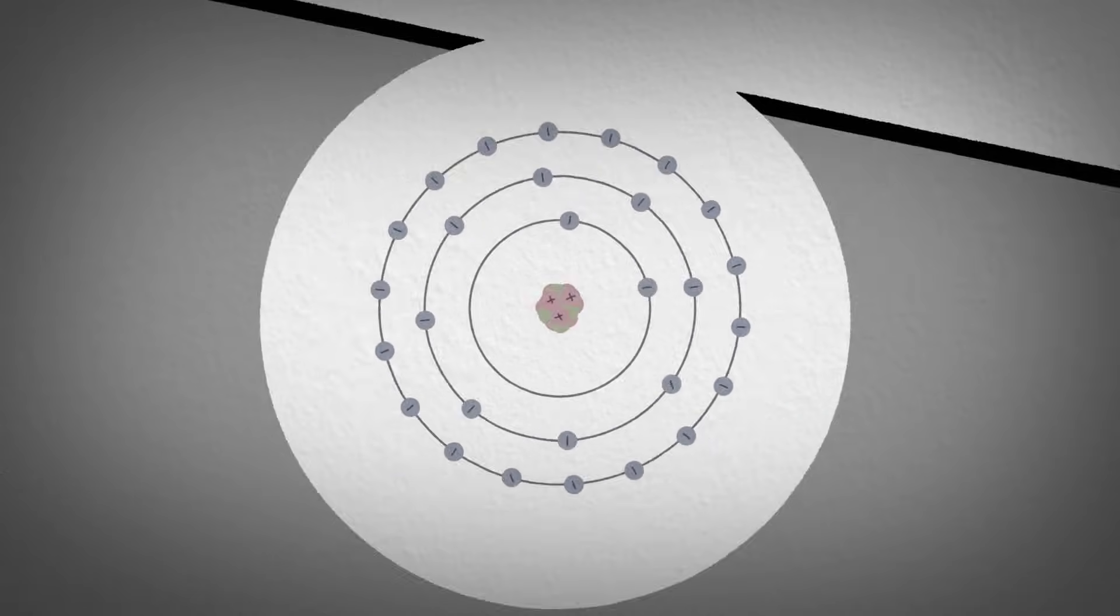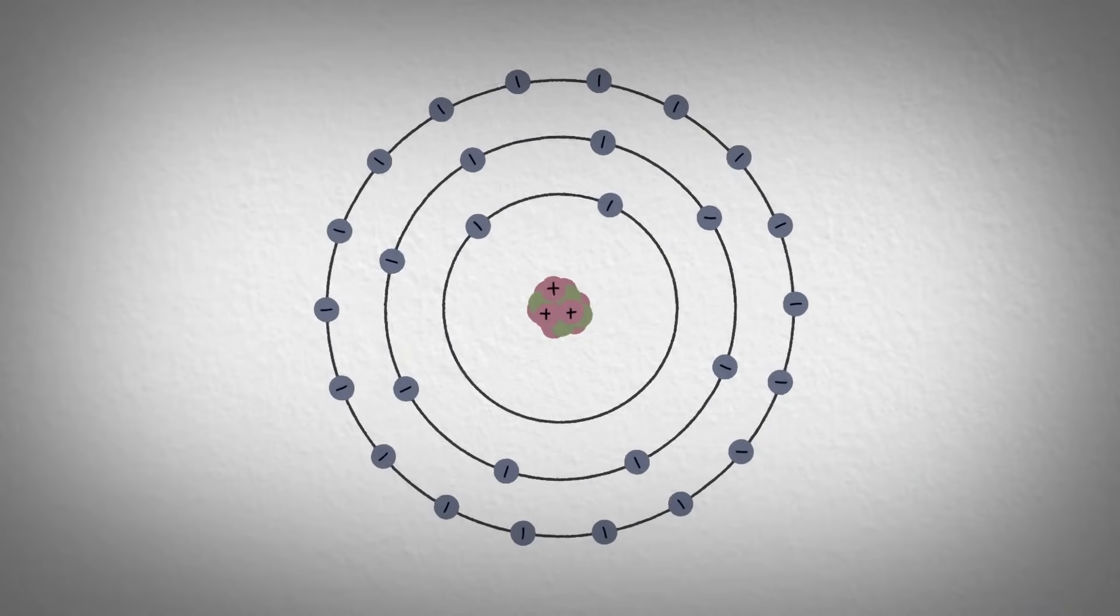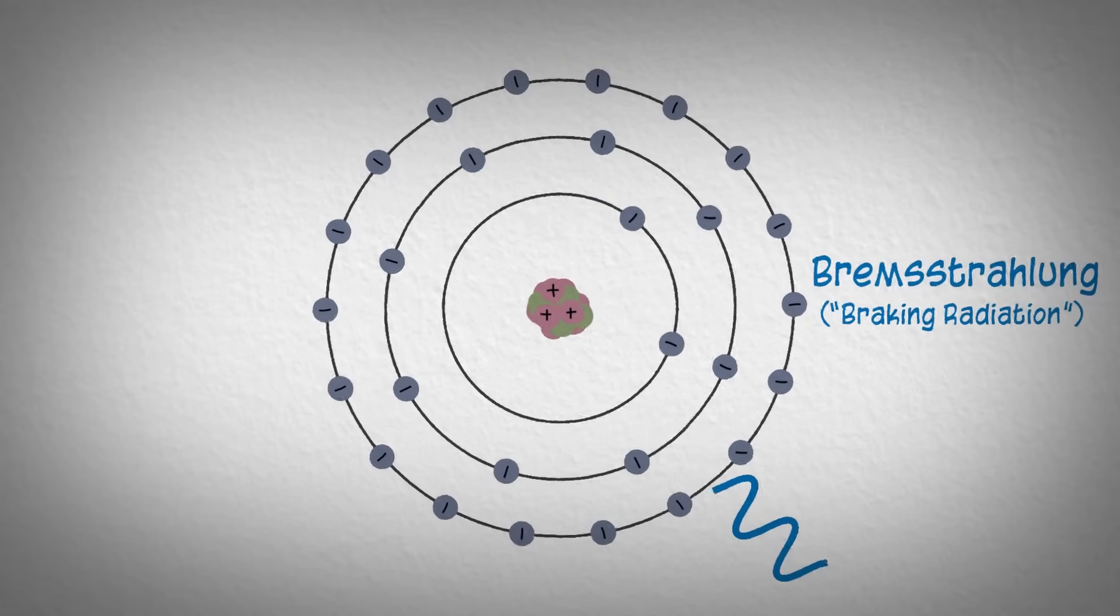When the electrons interact with the atoms in the anode, two different things can occur. The first possibility is that the electron will change speed and direction due to the atom's nucleus, producing a broad emission spectrum known as bremsstrahlung, German for breaking radiation.